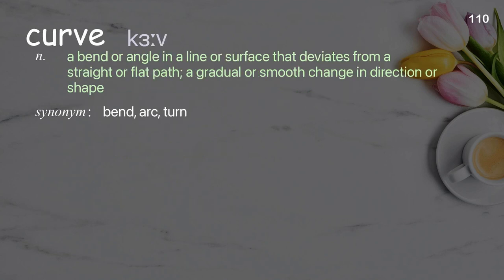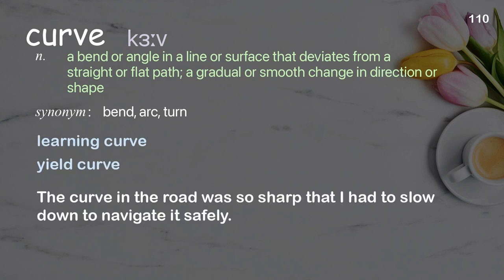Curve: A bend or angle in a line or surface that deviates from a straight or flat path; a gradual or smooth change in direction or shape. The curve in the road was so sharp that I had to slow down to navigate it safely.